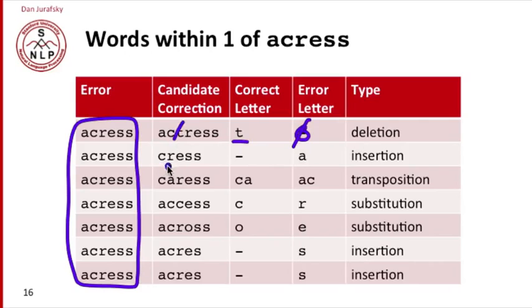Here, the proposed candidate is the word cares, the kind of vegetable. To turn cares into acress, we have to insert an A. So here we had a deletion, here we had an insertion. How about caress? To turn caress into acress, we turn CA into AC. So we have a transposition of CA and AC.